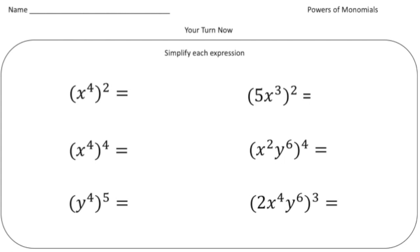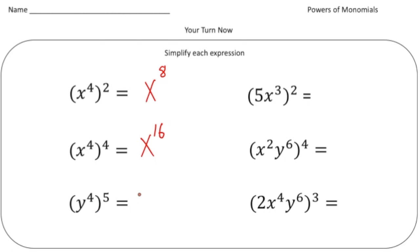Welcome back! Let's go over these problems. The first one: x to the fourth squared — this is a power of a power, so multiply the powers — that's x to the eighth. Next, another power of a power gives us x to the 16th. And then y to the 20th.